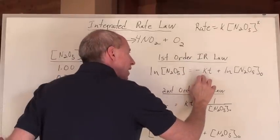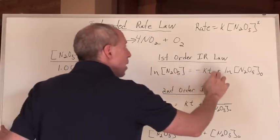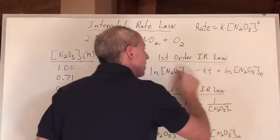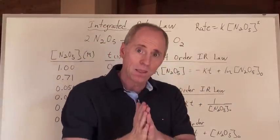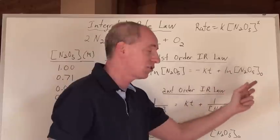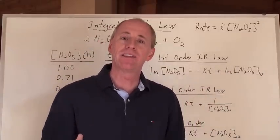If you take the natural log of the concentration of this chemical, and it equals negative K, that's the rate constant K, times that time, T, plus the natural log of the initial concentration, if you get, ready, a graph that when you graph this, you get a straight line, you have a reaction that obeys that formula.